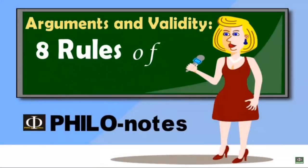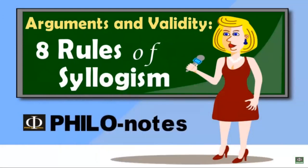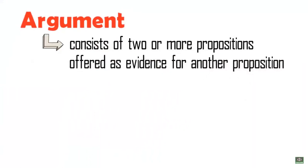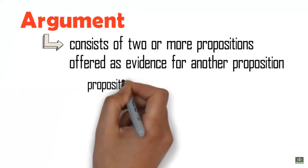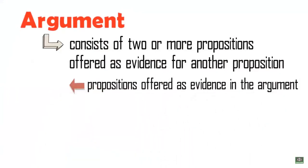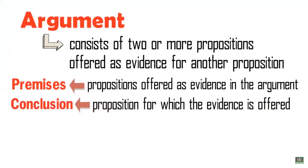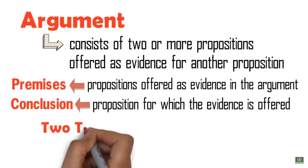What is an argument, and how do we determine its validity? An argument consists of two or more propositions offered as evidence for another proposition. In logic and critical thinking, the propositions offered as evidence are called the premises, while the proposition for which the evidence is offered is called the conclusion. When one gives an argument, one is providing a set of premises as reasons for accepting the conclusion. Importantly, giving an argument does not necessarily mean attacking or criticizing the other person — an argument can also be viewed as a support of someone's viewpoint.